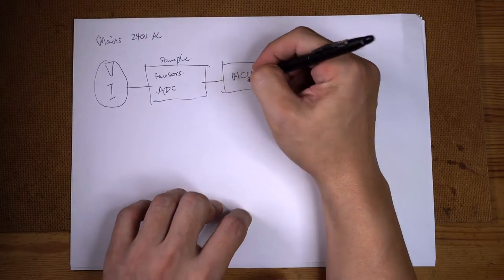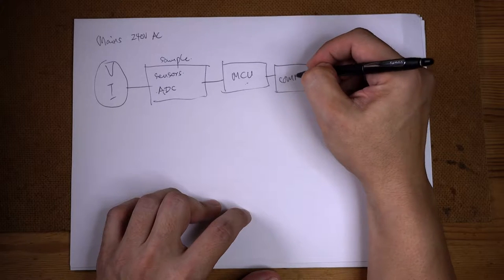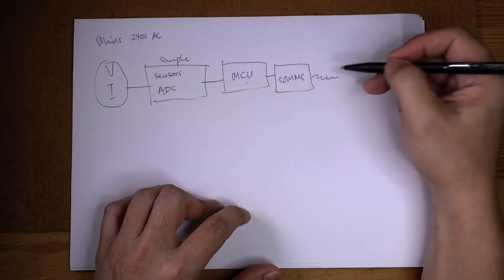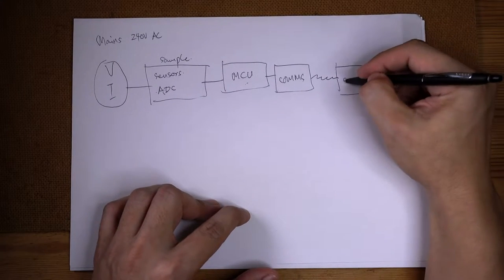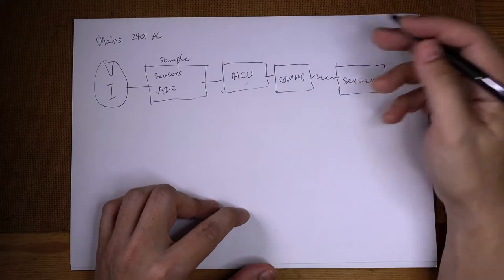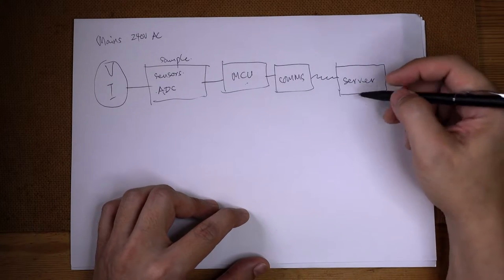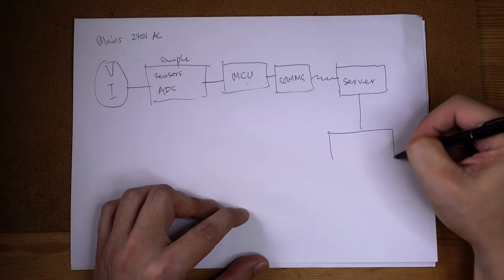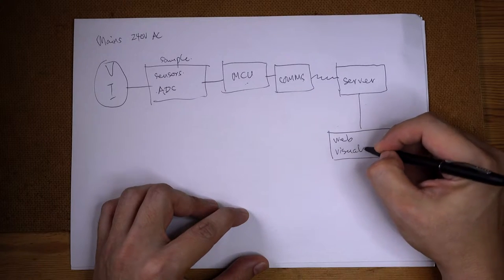The MCU needs a comm system to send data over some sort of link — serial, wire, wireless, Ethernet, whatever — to a server. That could be an MQTT server, or maybe even an SQL server as we are likely to use. This will then feed some sort of web interface that will actually visualize the data.